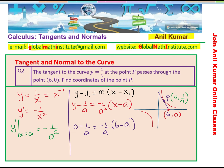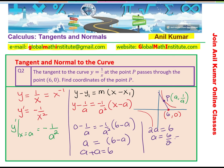We now have an equation in the single variable a. Multiplying through by a squared, we get: minus a squared times (0 minus 1 over a) equals 6 minus a, which simplifies to a equals 6 minus a. Bringing terms together: a plus a equals 6, so 2a equals 6, giving a equals 3. Therefore the coordinates of point P are (3, 1 over 3). I hope the concept is absolutely clear.